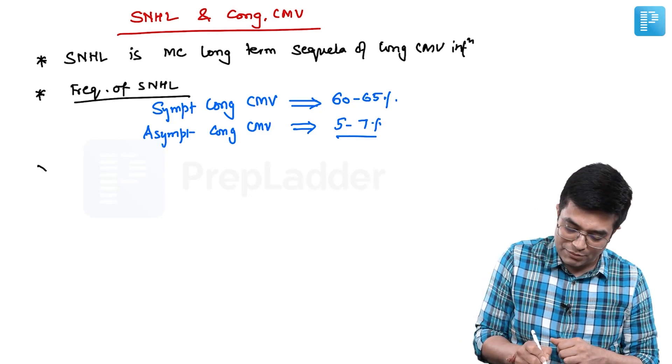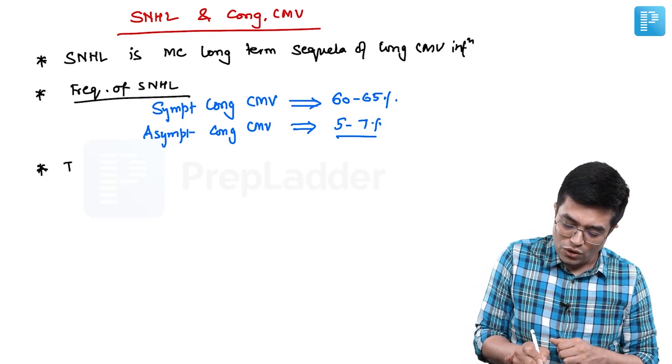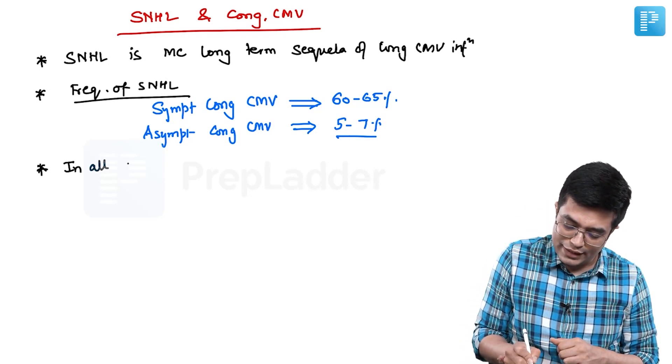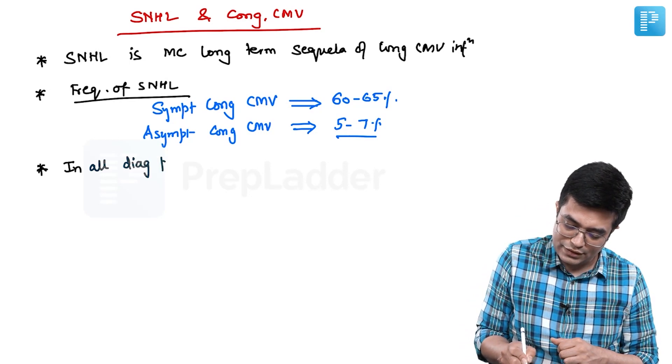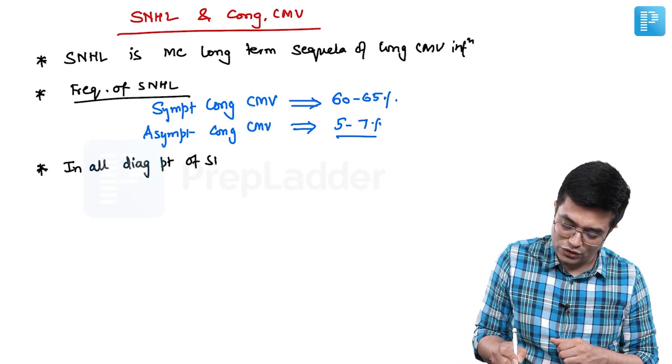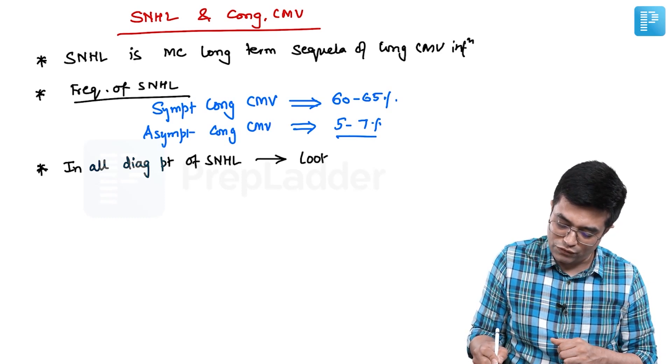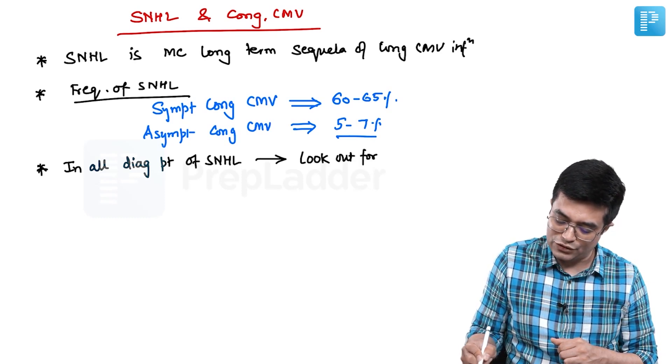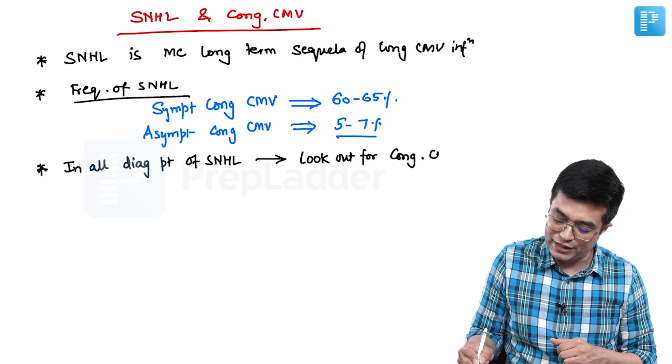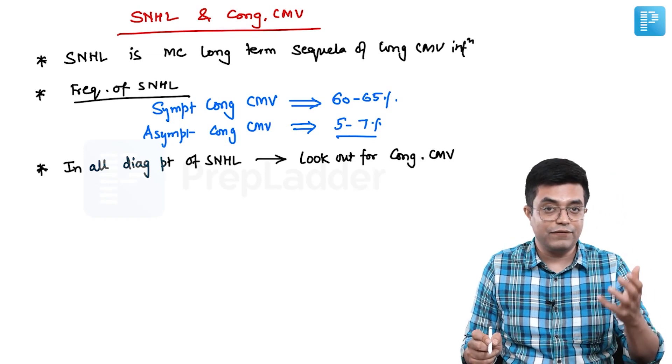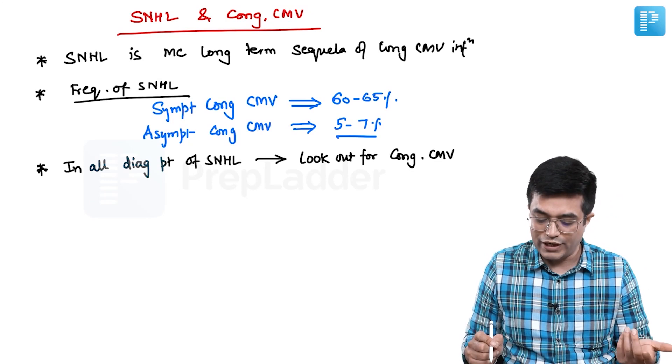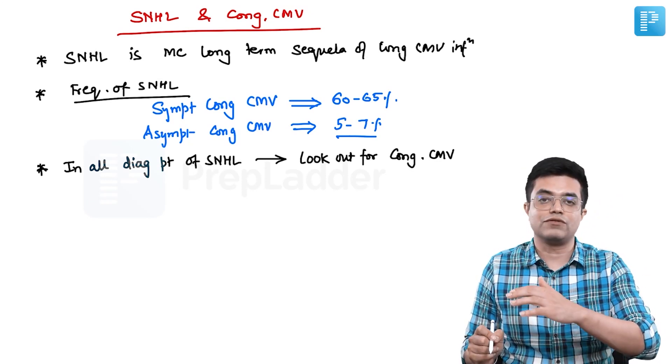The third thing that you should remember is that in all diagnosed patients of sensory neural hearing loss, you should watch for, you should look out for any evidence of congenital CMV. So retrospectively, you will try to see if congenital CMV was the reason why a sensory neural hearing loss was present in the child.